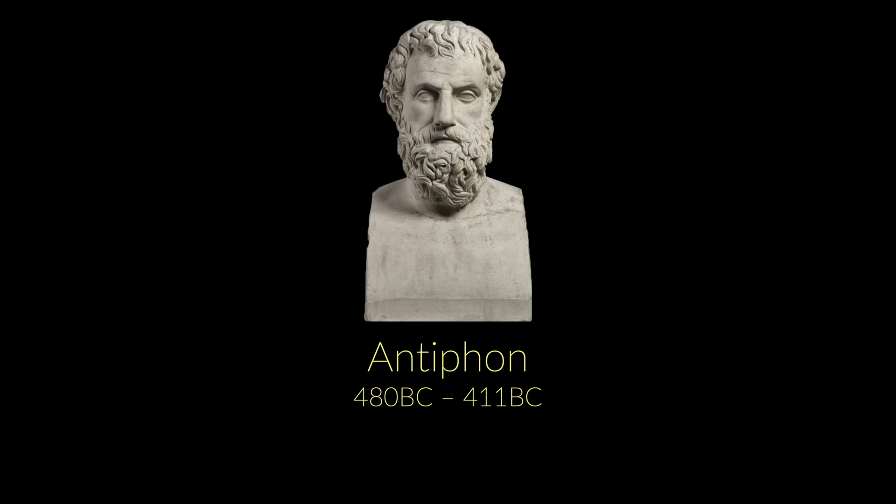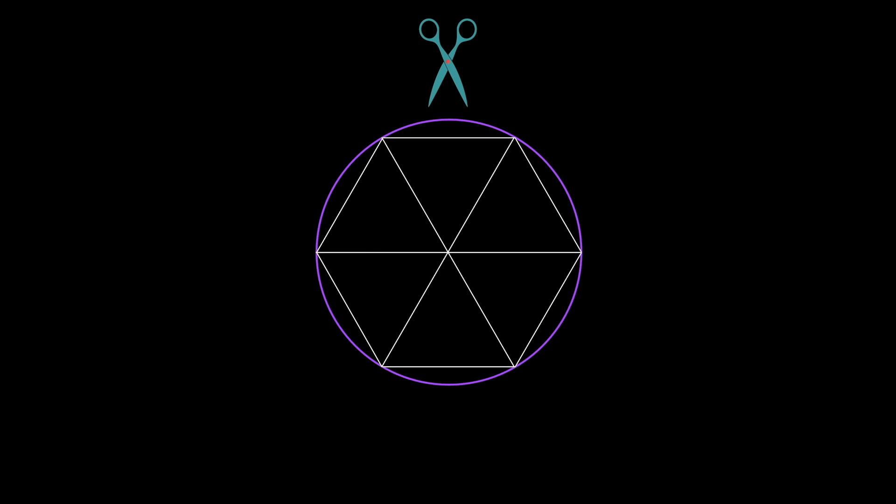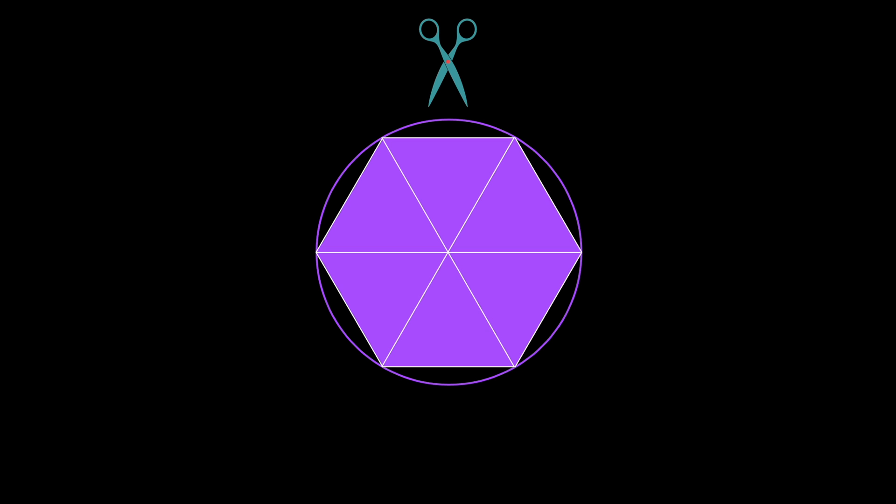The method of exhaustion is basically taking the cutting and stitching processes to the extreme. It originated with Antiphon in the 5th century BC when he was working on the area of the circle. Antiphon started by inscribing a polygon inside the circle. Now finding the area of a polygon is easy as we can cut it into triangles and then sum up the areas of these triangles.